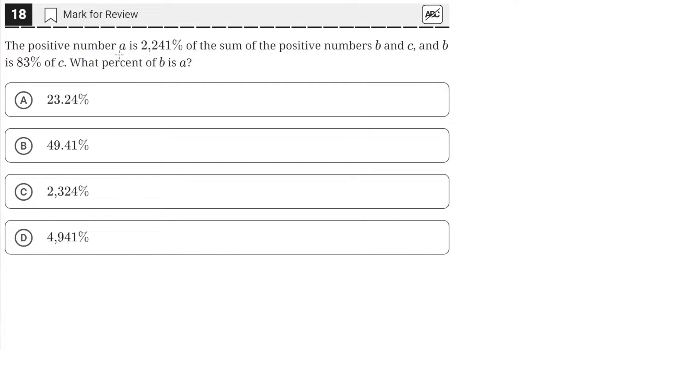The positive number A is 2,241% of the sum of the positive numbers B and C. And B is 83% of C. What percent of B is A?